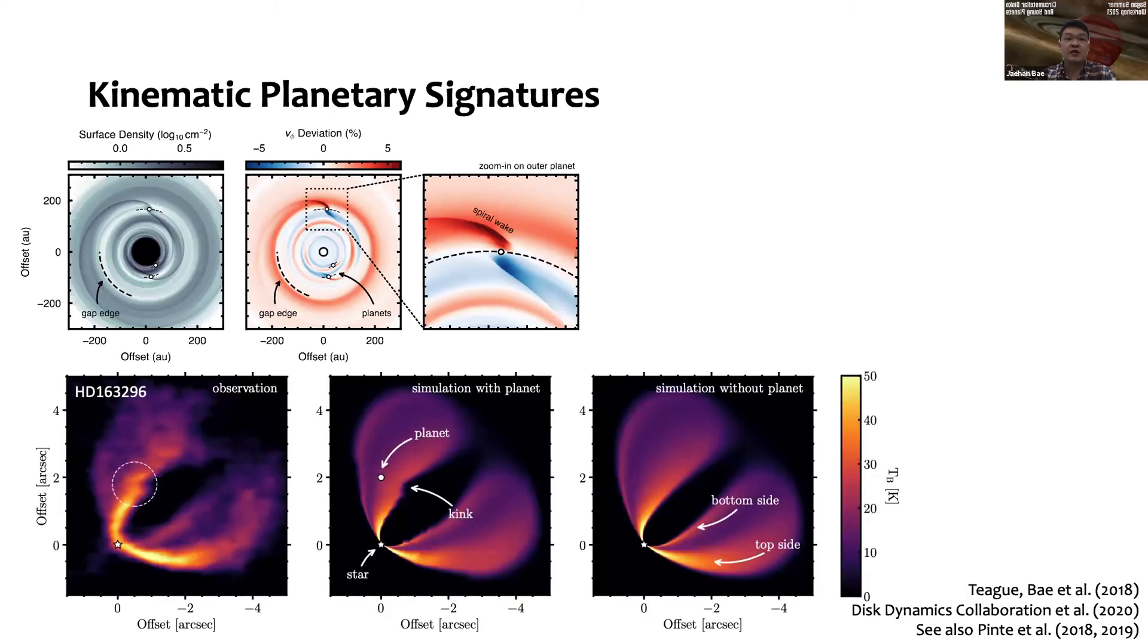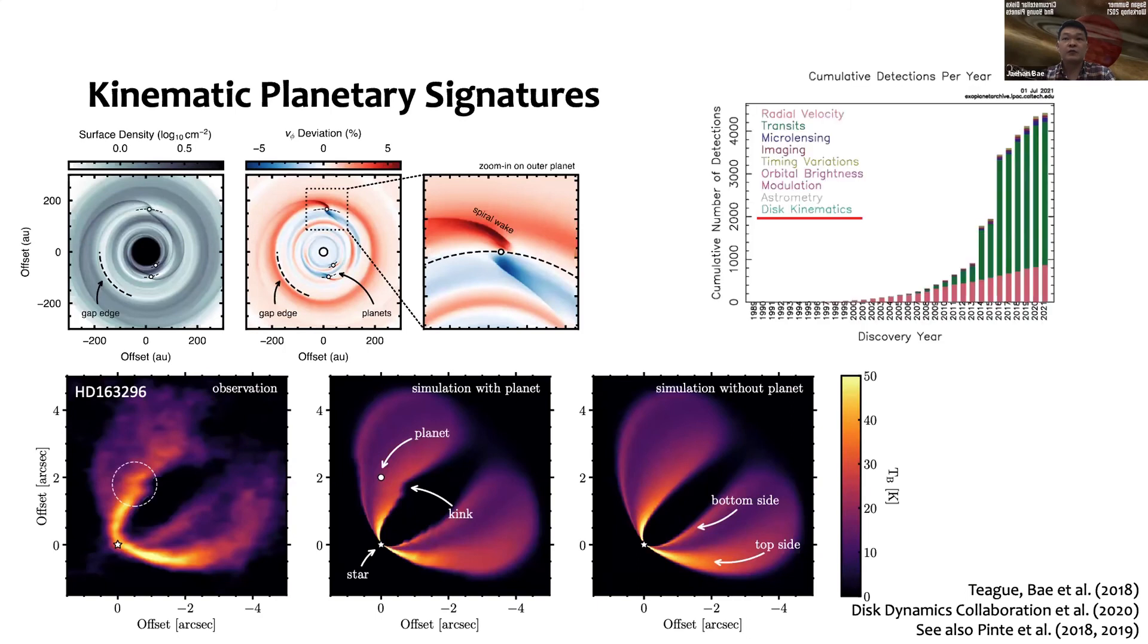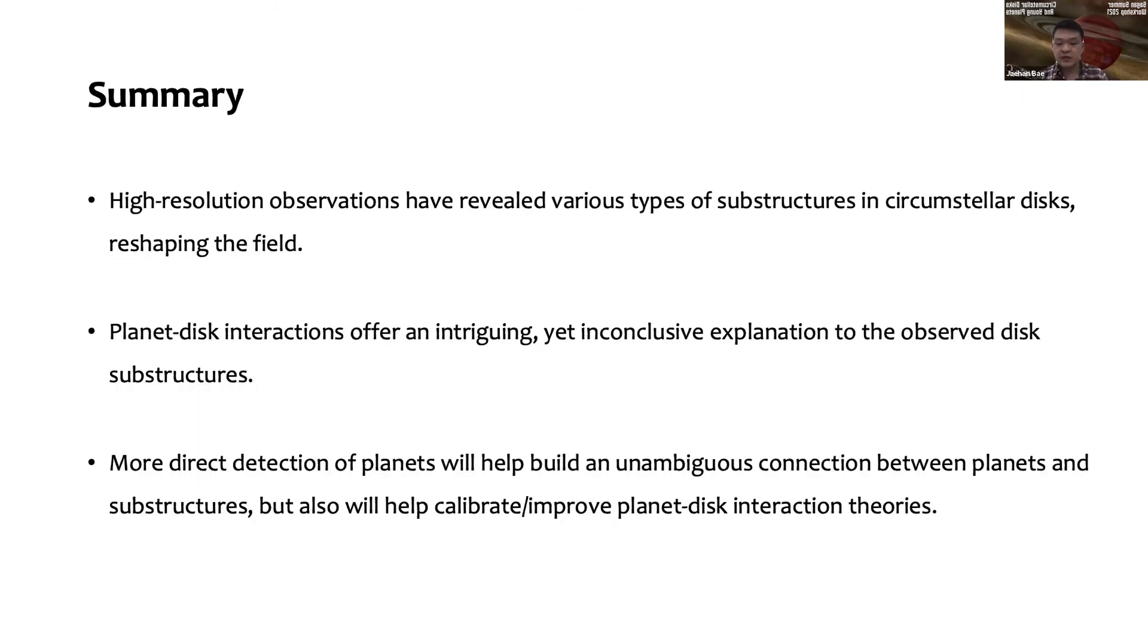The other one was covered briefly by Laura this morning. We can look at the kinematics—planets generate perturbations to the gas and dust, so you can look for some signature in the gas molecule using molecular line emission. I'd like to point out this diagram from the Exoplanet Archive. There is this item called disk kinematics, which is registered as a viable method to find young planets. What this is referring to is to actually look for kinematic planetary signatures in ALMA data. With that, I will stop my talk and answer any questions you might have.